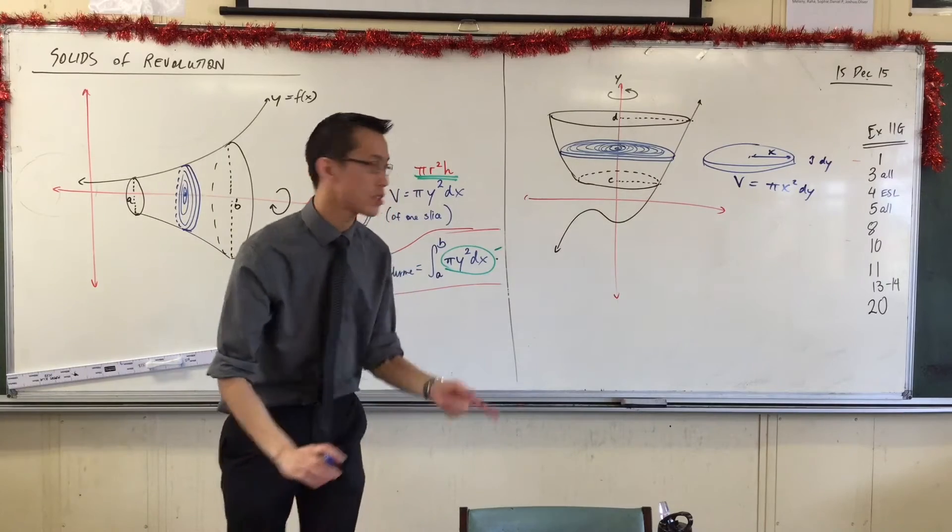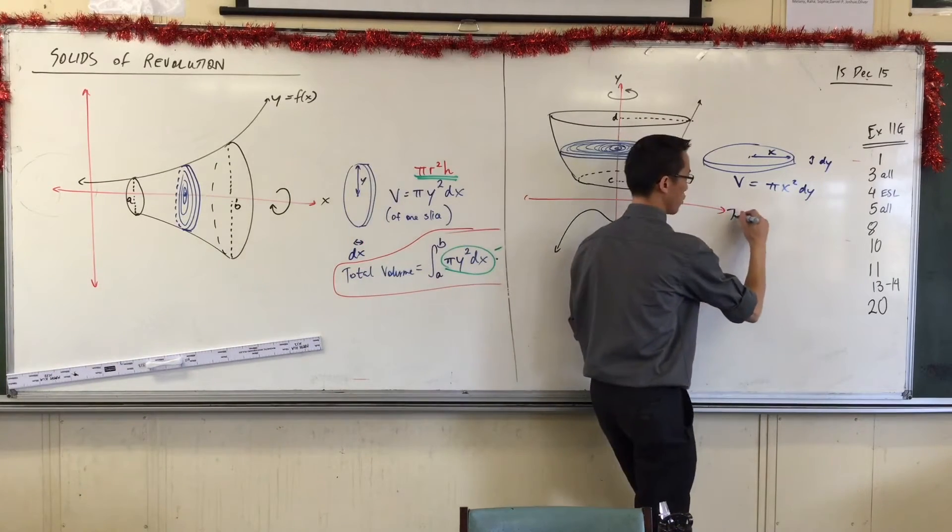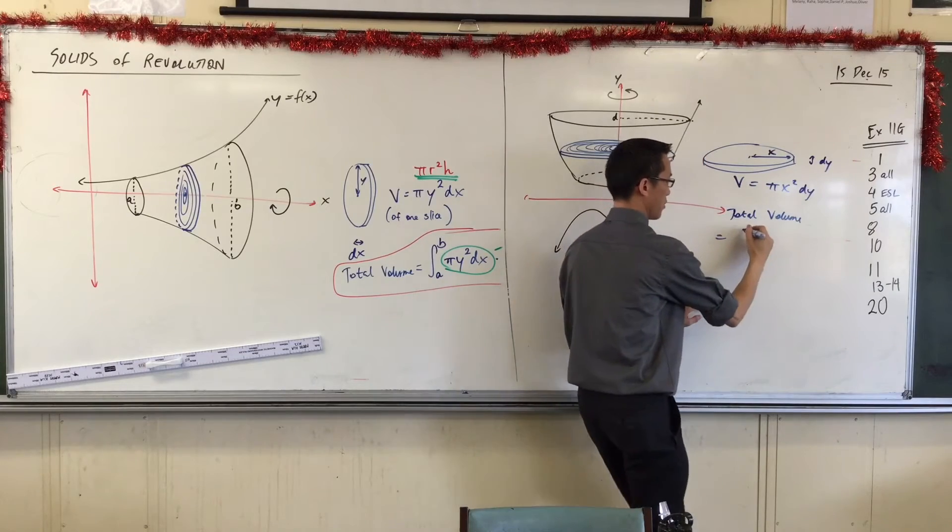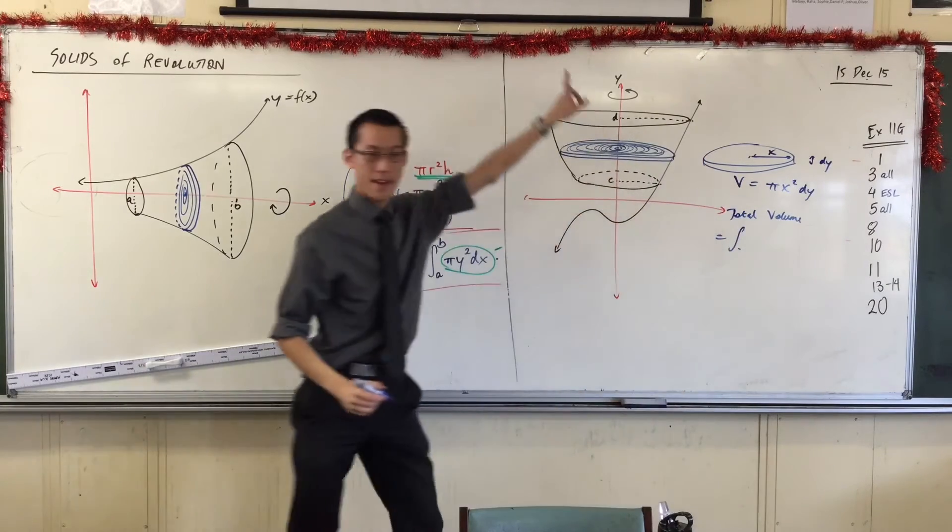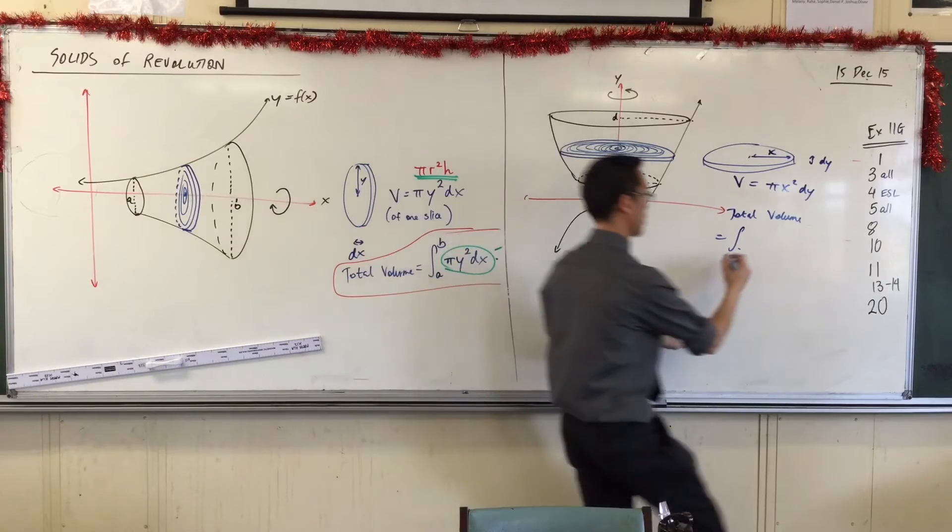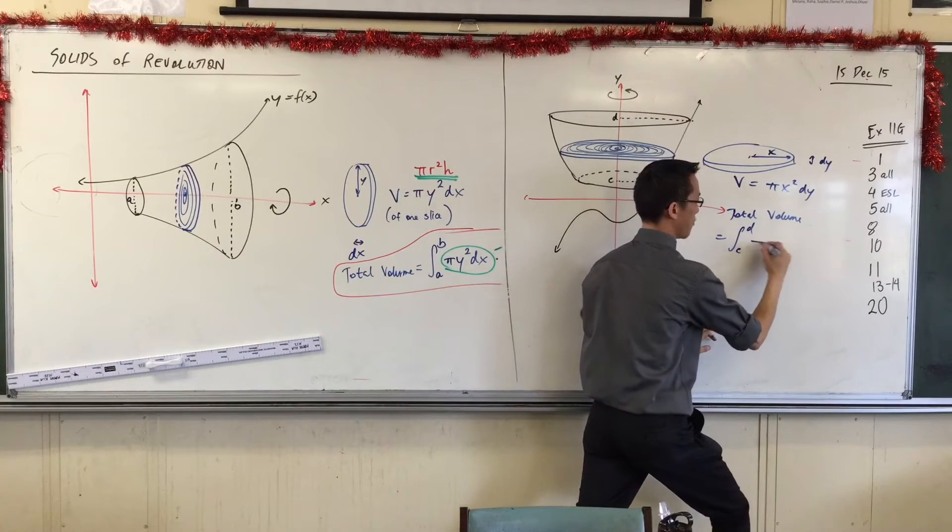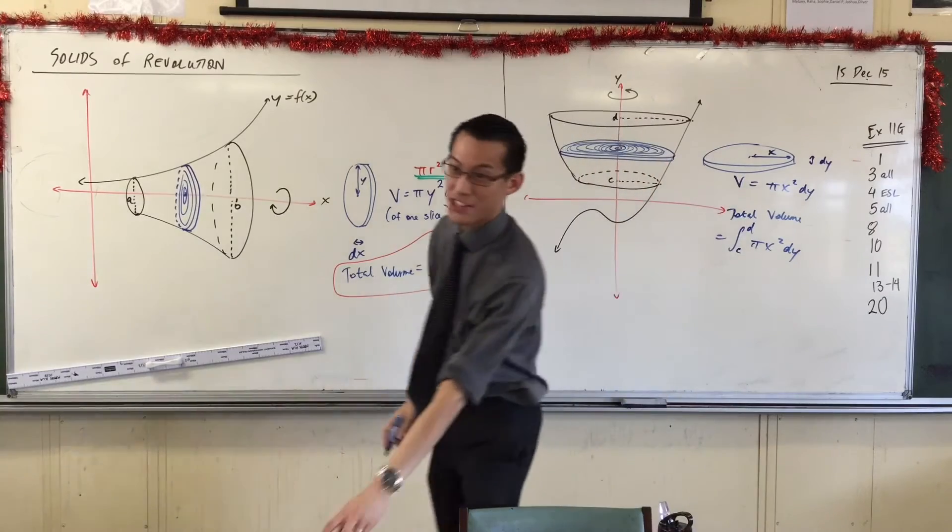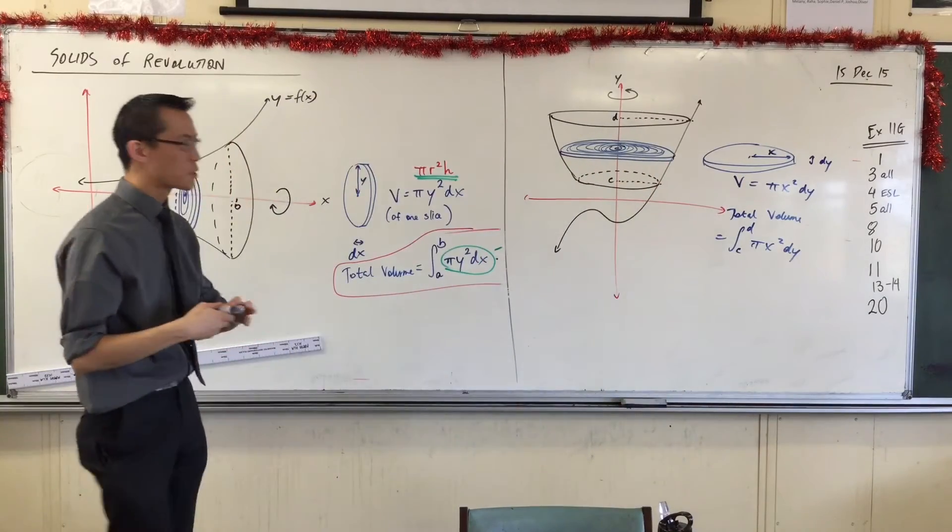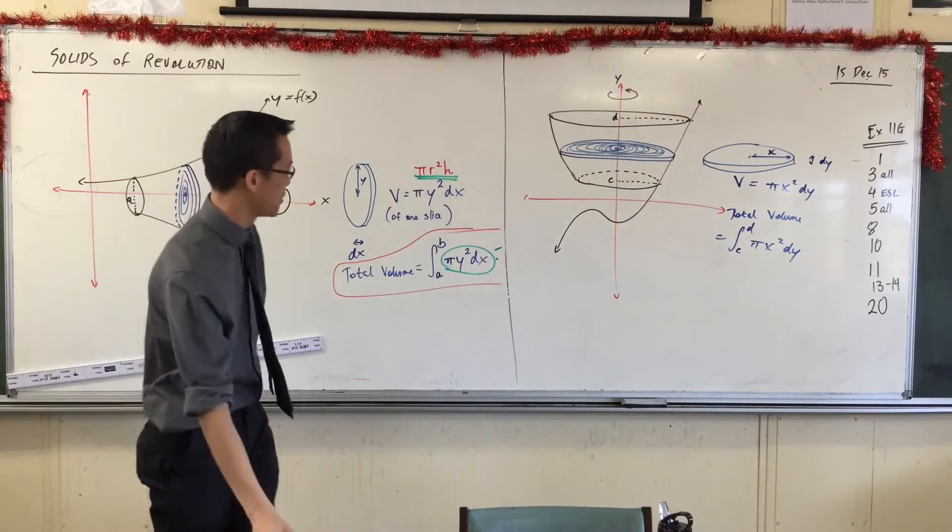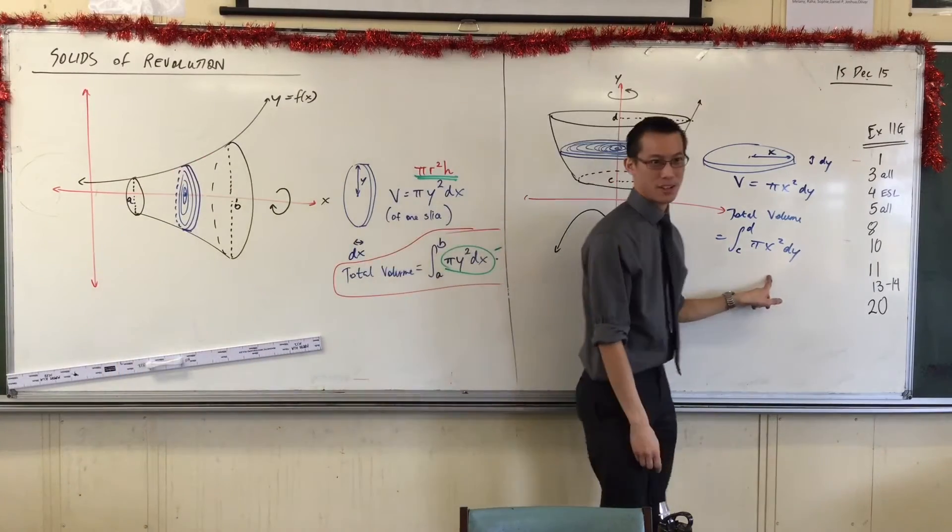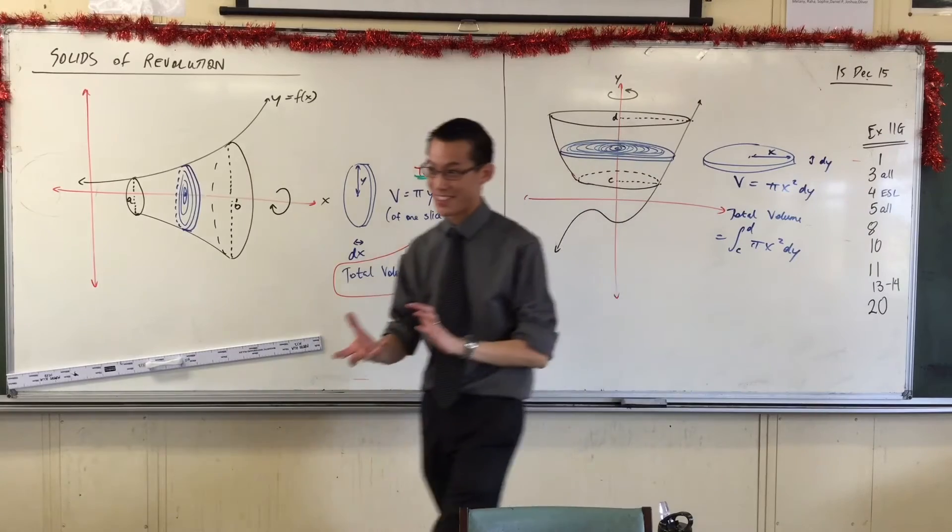And then you form your integral just like you did before. Total volume equals, from, now you can see I've made my boundaries c and d, so from c to d of π x squared dy. Now it doesn't take that much imagination to see that it is wildly easy to confuse this formula for volume with this formula for volume, which one is which.